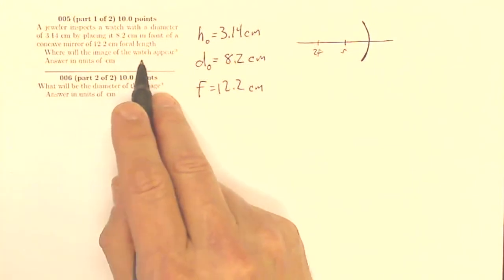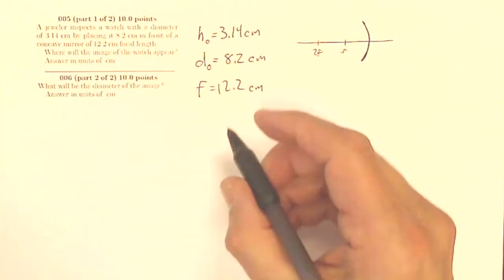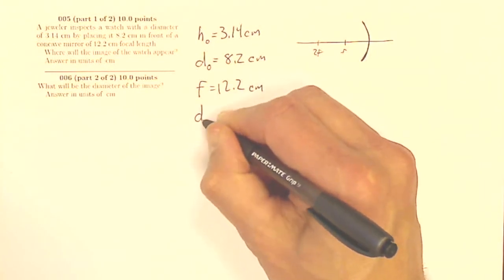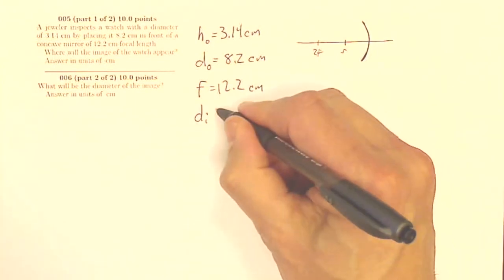Where will the image of the watch appear? Answer in units of centimeters. So image of the watch, where, is going to be the distance to the image. So I'm looking for distance to the image.